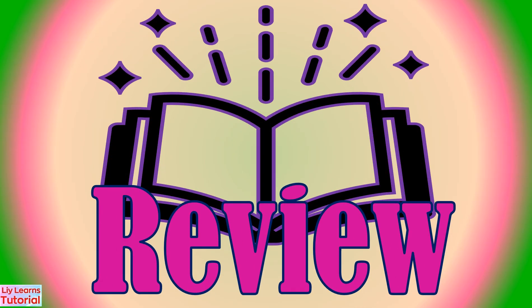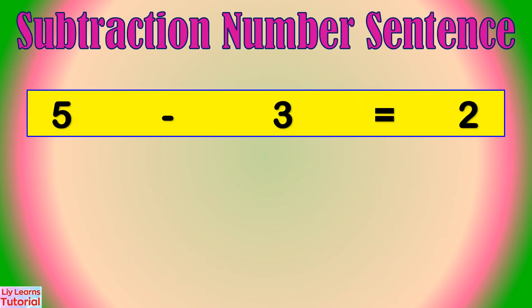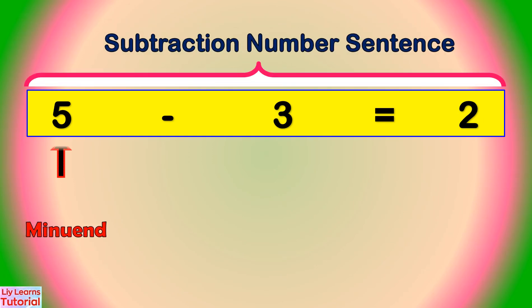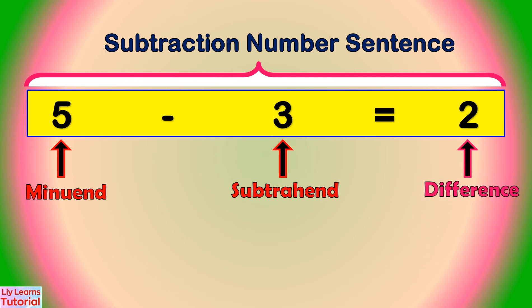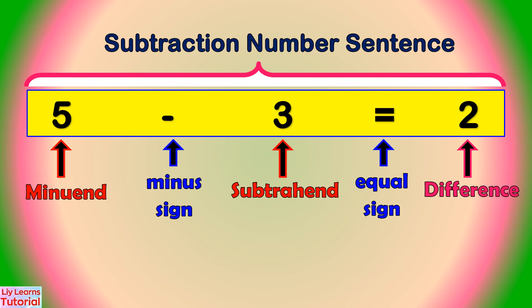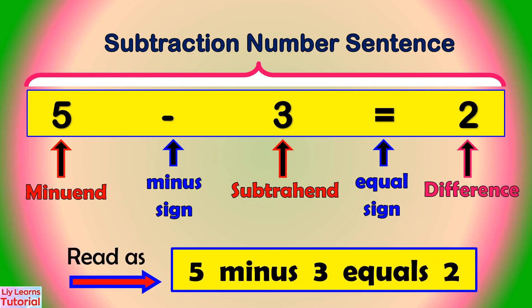Let's review! This is a subtraction number sentence. 5 is the minuend, 3 is the subtrahend, 2 is the difference. This is a minus sign, and this is an equal sign. We can read this as 5 minus 3 equals 2.